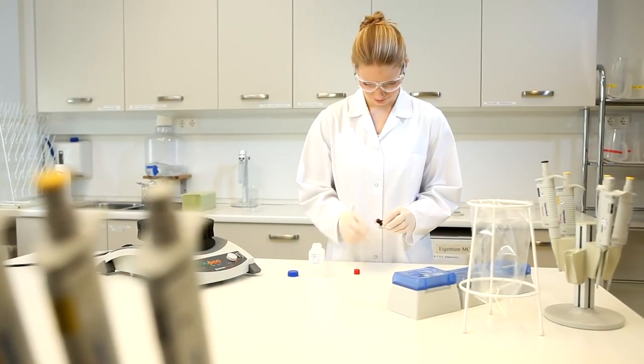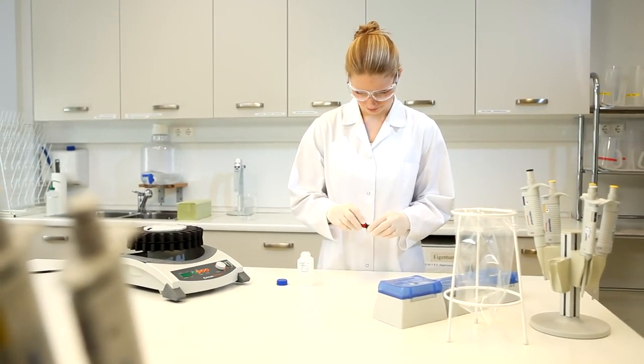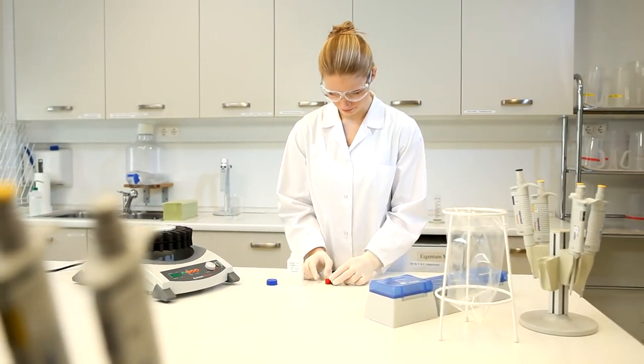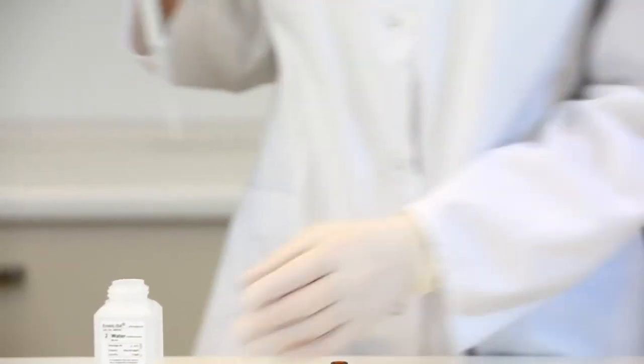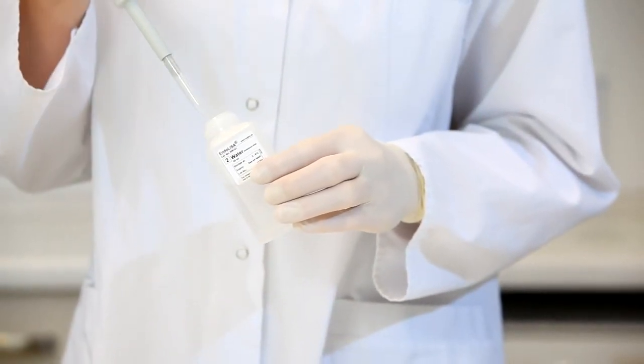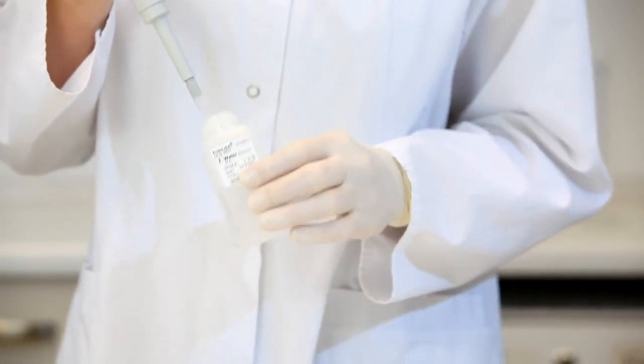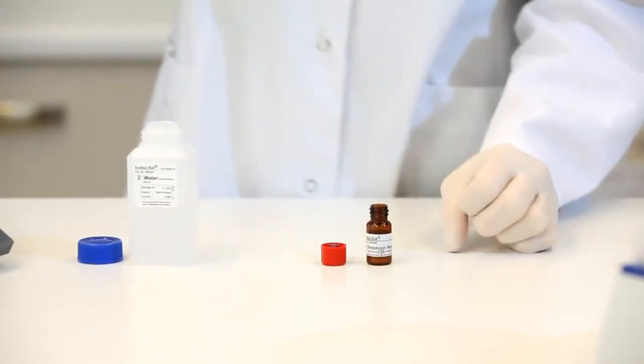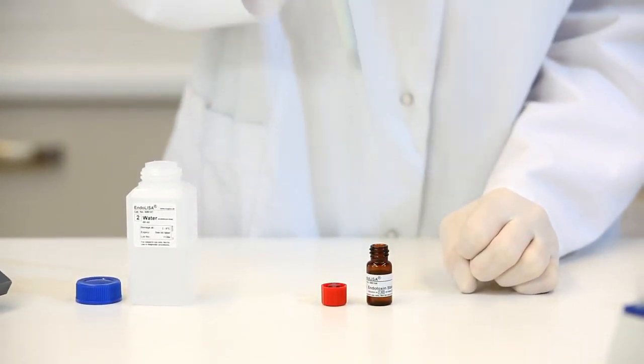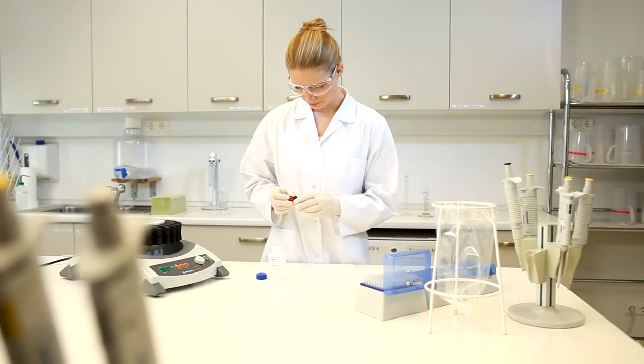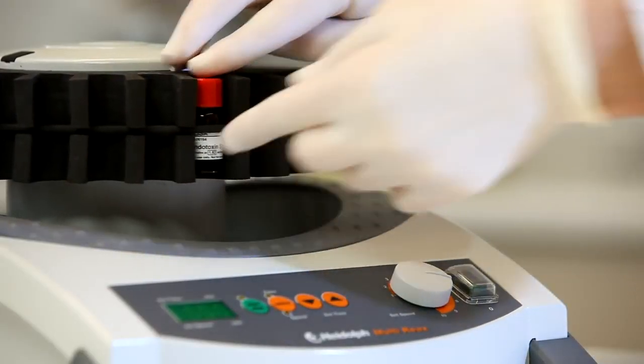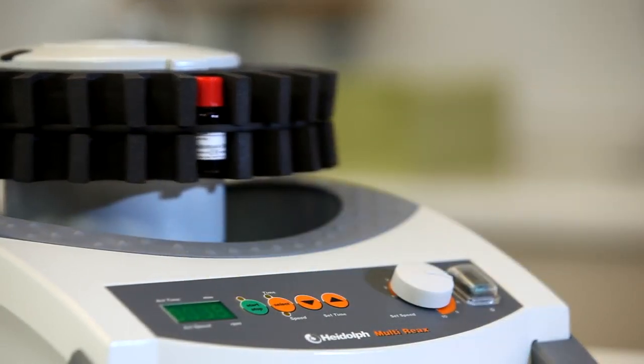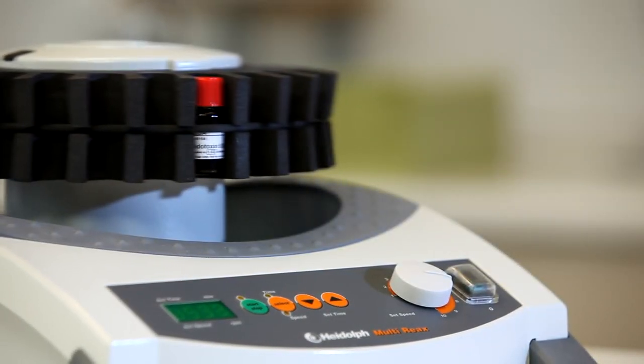Start with the preparation of the endotoxin standard solution. The exact volume of endotoxin free water required for dissolving the endotoxin standard is indicated on the label. Add the water to the endotoxin standard bottle. Close the bottle tightly and vortex thoroughly on a test tube shaker for at least 10 minutes. The endotoxin standard solution is ready. It has a defined endotoxin concentration of 500 EU per milliliter.